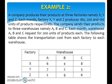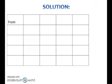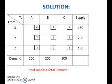Let's look at example 2. To set up a table for this problem, do the same things as in example 1. But note that in this problem, total supply is not equal to total demand. Therefore, this is an unbalanced transportation problem.